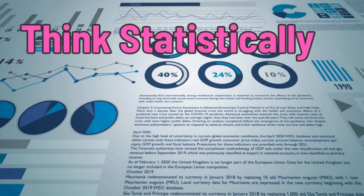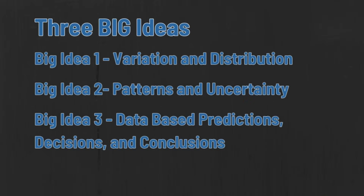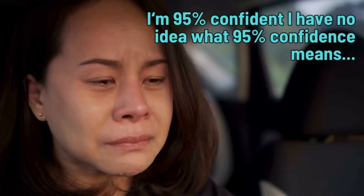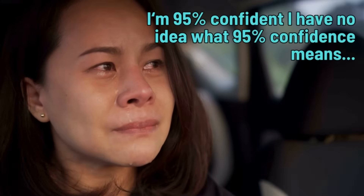You've been learning all year about how to be a good statistician — put those skills to use. There are three big ideas covered on the AP statistics exam. Big idea number one is variation and distribution. Big idea number two, patterns of uncertainty. Big idea number three, data-based predictions, decisions, and conclusions. After the multiple choice, there's going to be about a 15-minute break. You can go outside, get some fresh air, grab a bite to eat, get a drink of water — or go sit in your car and cry about how bad it was.